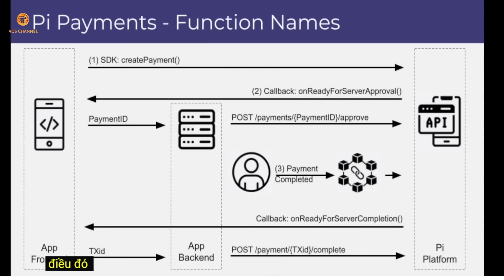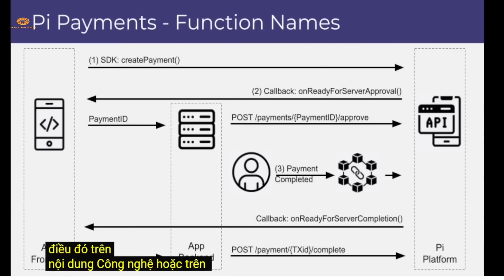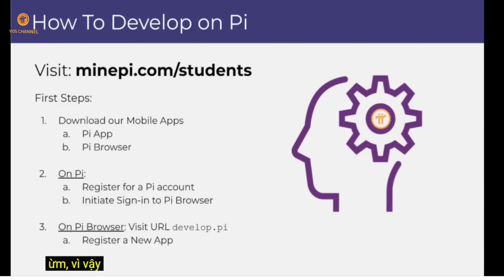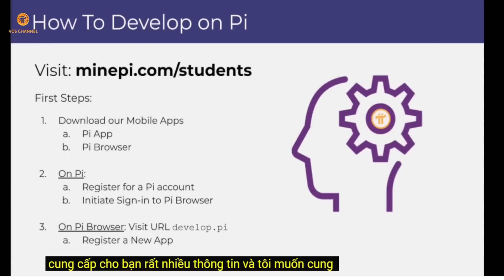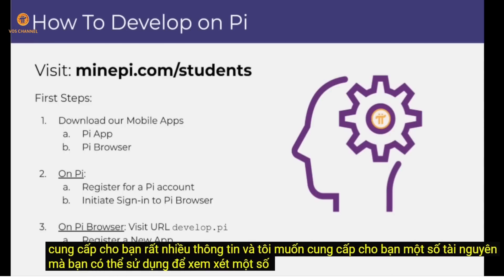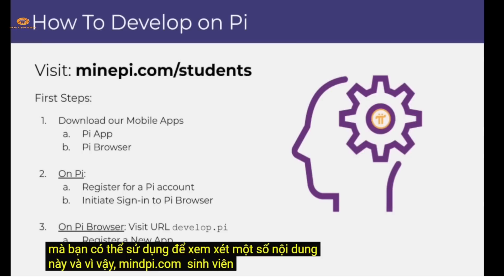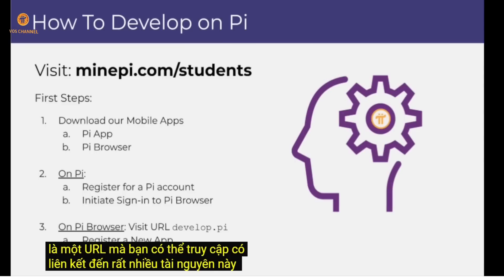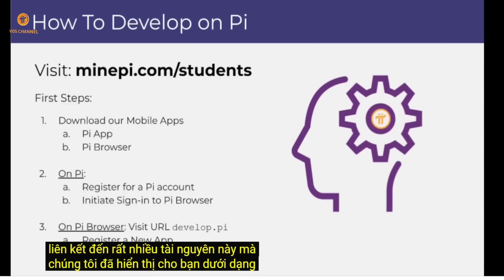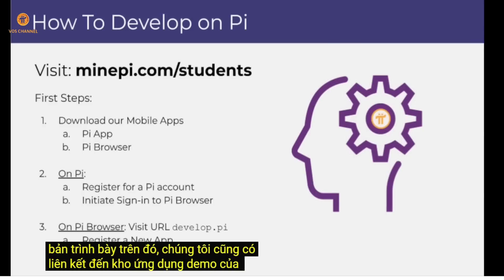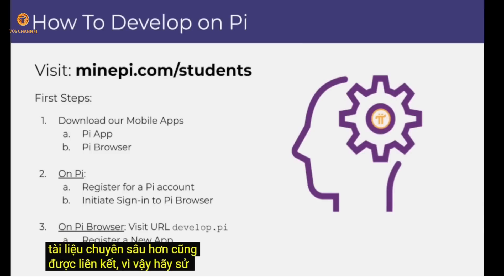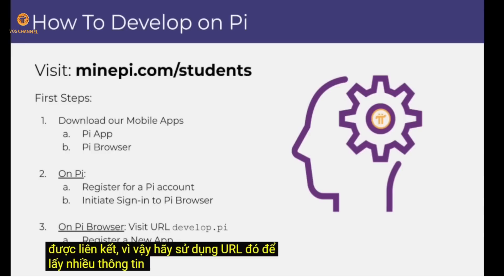We've covered a lot of information, so here are some resources you can use to review it. The URL minepi.com/students has links to many of these resources — the presentations shown here, links to our demo app repository on GitHub, and more in-depth documentation. Use that URL to access all the information we spoke about here.